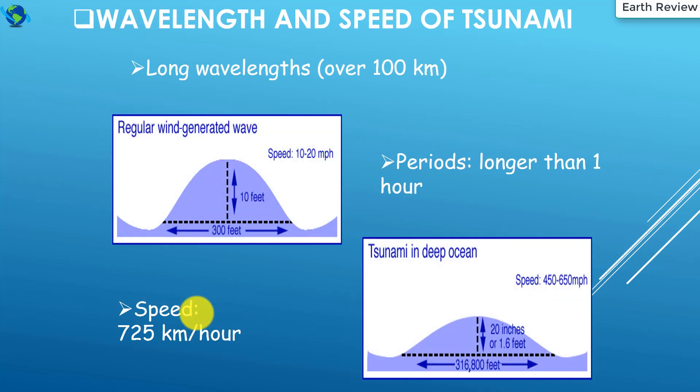Let's talk about the wavelength and speed of a tsunami. The wavelength of a tsunami is very long and can be over 100 kilometers. The period is longer than one hour, and the tsunami speed is basically 725 kilometers per hour.